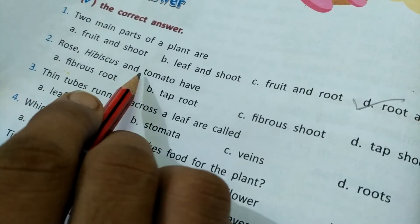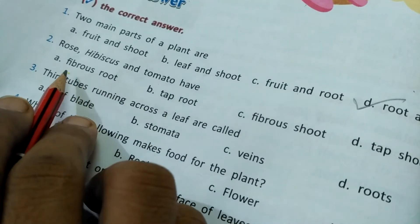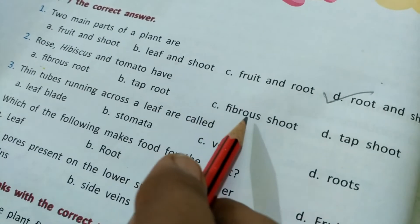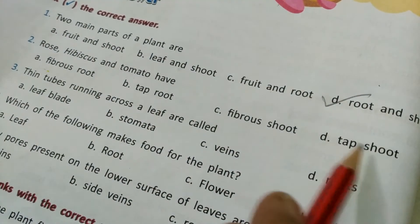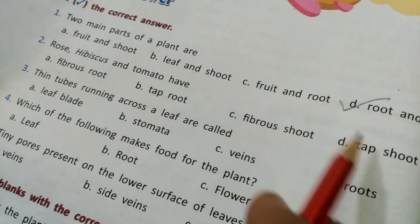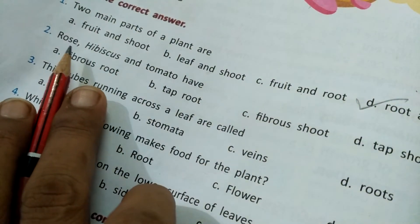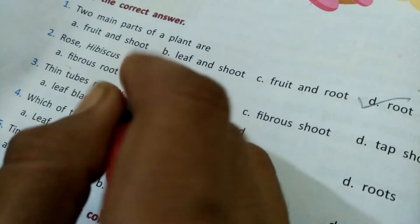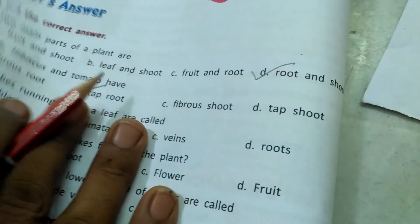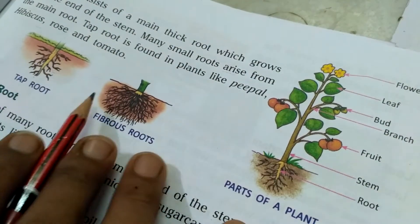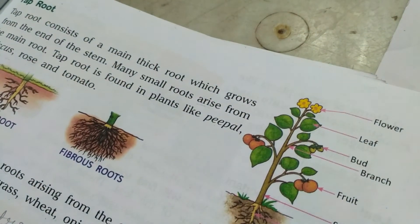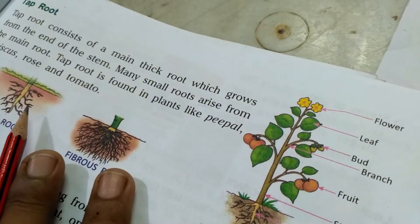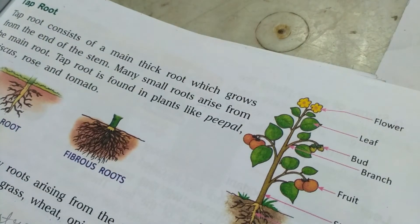Question 2: Rose, hibiscus, and tomato have fibrous root, tap root, fibrous shoot, or tap shoot? The shoot options are not correct. We have studied that rose, hibiscus, and tomato have tap root. You must know the difference between tap root and fibrous root — that is also very important.